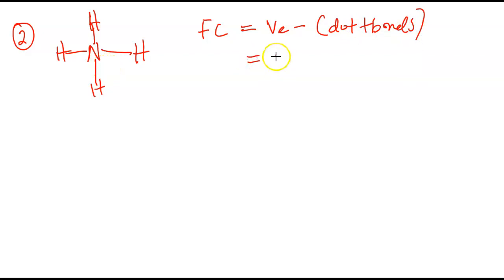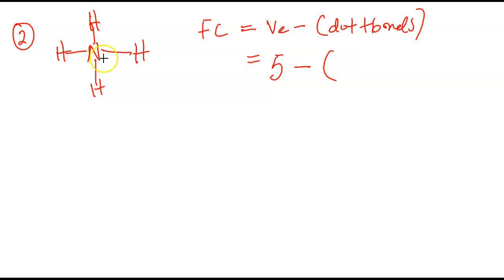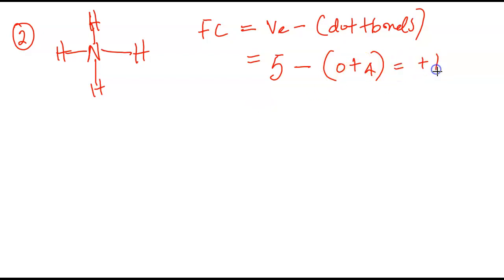The formal charge formula again is equal to the valence electron minus the number of the sum of the dots plus the bonds in that atom. Nitrogen is in group five, minus how many dots does it have? We're going to count. It is satisfied: two, four, six, eight. Nitrogen is fully satisfied here with the octet rule, so no need to add any dots. But with that, it doesn't have any lone pair dots. So the dots it has is zero, plus the number of bonds is four. Zero plus four means four. Five minus four gives you plus one.